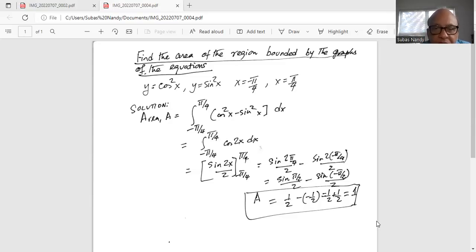Now that is equal to cosine square x minus sine square x is equal to cosine 2x. So finally we get integration from minus pi over 4 to pi over 4 cosine 2x dx.